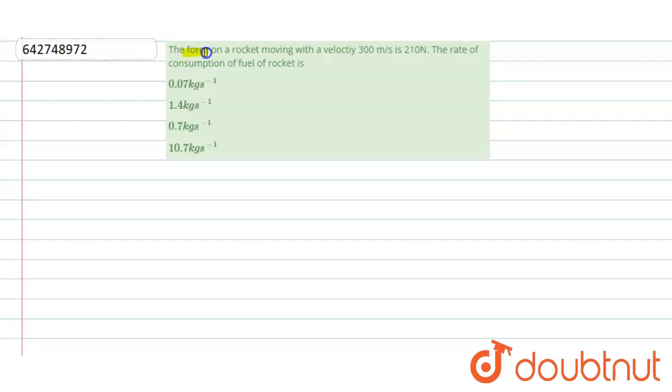The force on a rocket moving with velocity 300 meter per second is 210 newton. The rate of consumption of fuel of rocket is what?